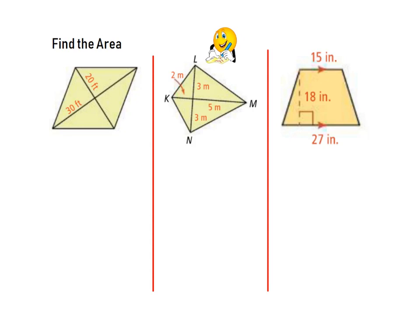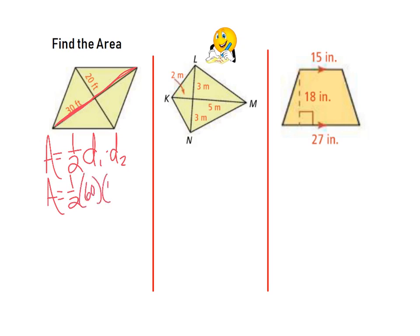For this rhombus, the formula is area equals one-half d1 times d2. Be careful: the 30 feet shown is only half a diagonal, so the full first diagonal is 60 and the other full diagonal is 40. Half of 60 is 30, and 30 times 40 is 1,200 feet squared.